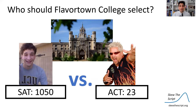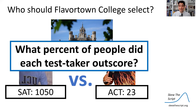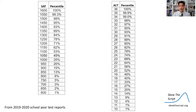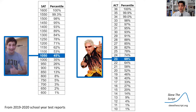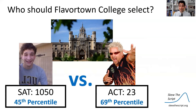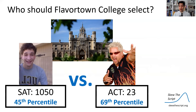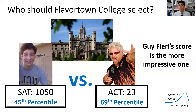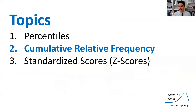Let's get back to the question: who should Flavortown College select? Another way to ask this is: what percent of people did each test taker outscore? Looking at the percentiles for the SAT and ACT, my score of 1,050 is at the 45th percentile, and Guy Fieri's ACT score of 23 is at the 69th percentile. So I tied or outscored 45% of SAT test takers, while Guy Fieri tied or outscored 69% of ACT test takers. With a higher percentile, Guy Fieri has the more impressive score — he's the one the college should select.